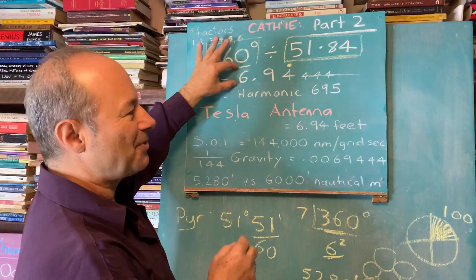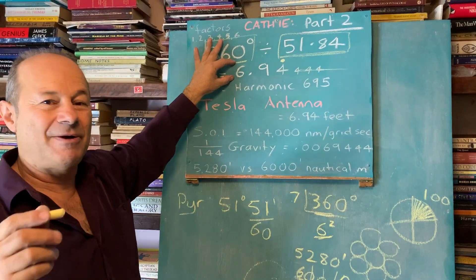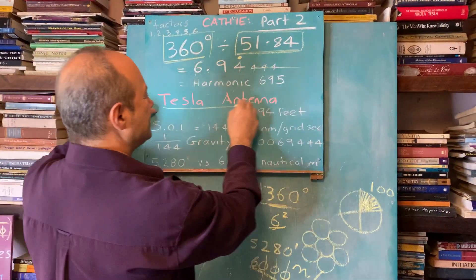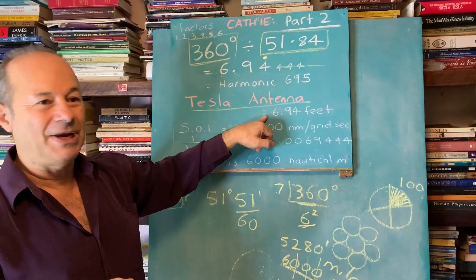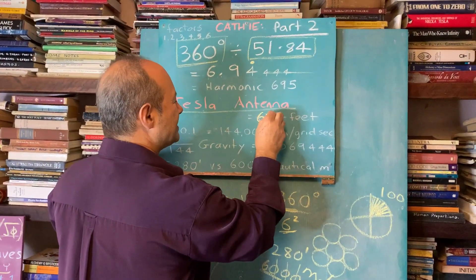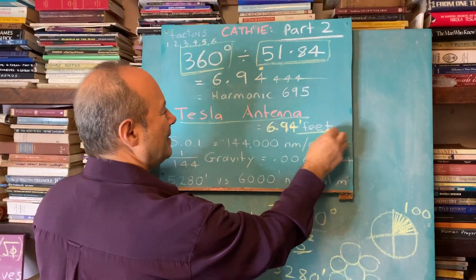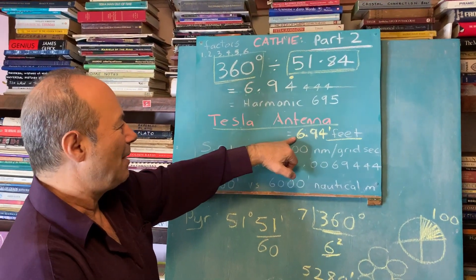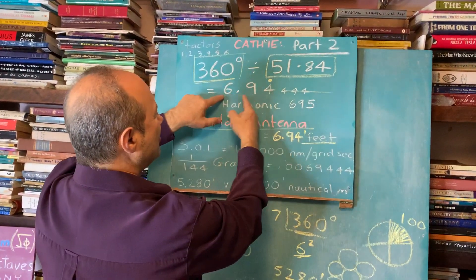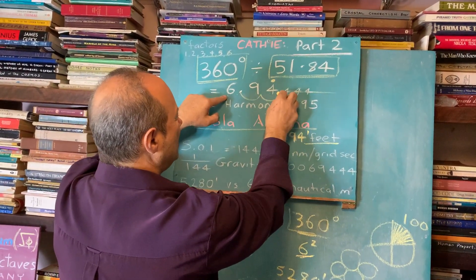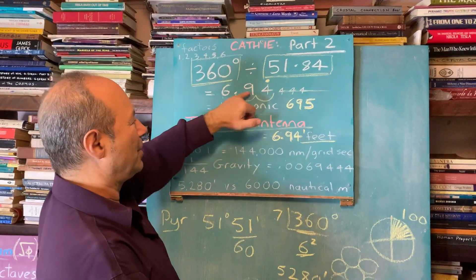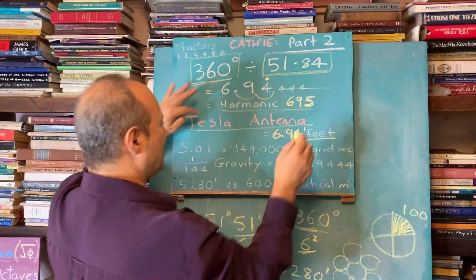Bruce Cathy noticed that this ratio 6.944 kept coming up when he followed the tracking of all the identified UFO pathways on the earth grid. Did you know that this is Tesla's antenna? When Tesla ran his car, the first car with no fuel, just using the ether, utilizing the energy of the cosmos, he had an antenna at 6.94 feet. So you know that this is a harmonic. We round 6.9444 off to 695 because we're allowed to move the decimal twice. That's called harmonic 695.